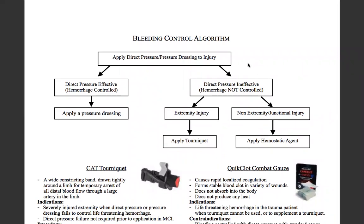We have a bleeding control algorithm here, straight out of the textbook. Apply direct pressure or a pressure dressing to the injury. This branches off one of two ways: direct pressure is effective and the hemorrhage is controlled, in which case you apply a pressure dressing; or direct pressure is ineffective. If it's an extremity injury, we'll use a tourniquet. If it's a non-extremity or junctional area, we will use a hemostatic agent.